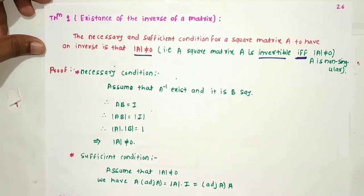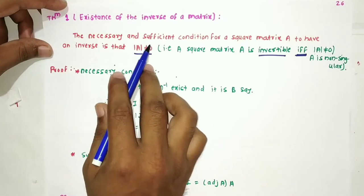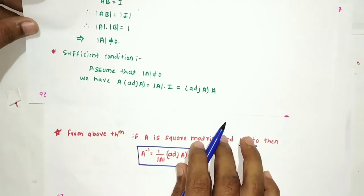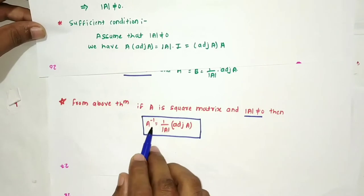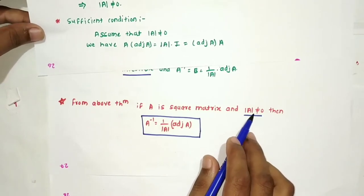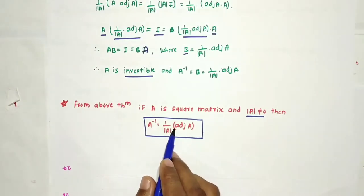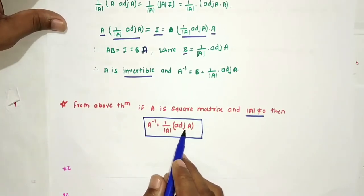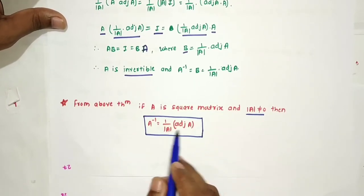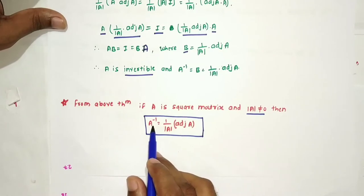Welcome to the next lecture of matrix algebra. In the last lecture we discussed the theorem on the existence of the inverse of a matrix. After that theorem, we found the formula for finding A inverse: if the determinant of A is non-zero, then A inverse equals 1 upon determinant of A into adjoint of A. We also discussed examples on finding adjoint of A and determinant of A.